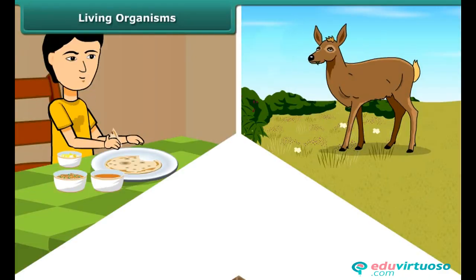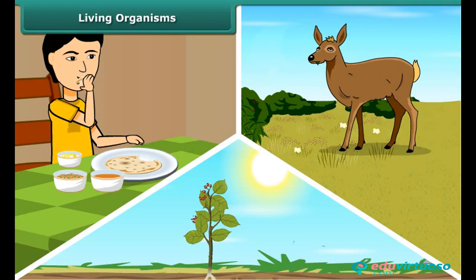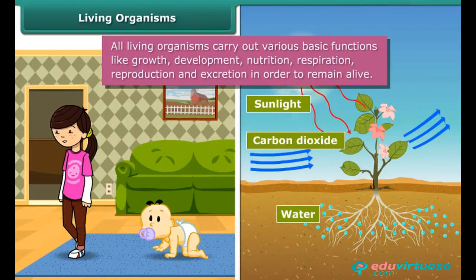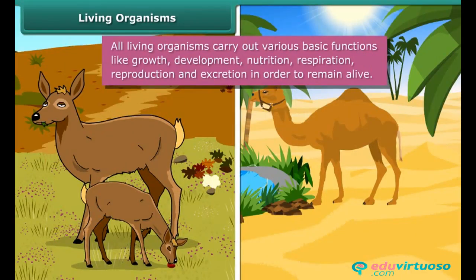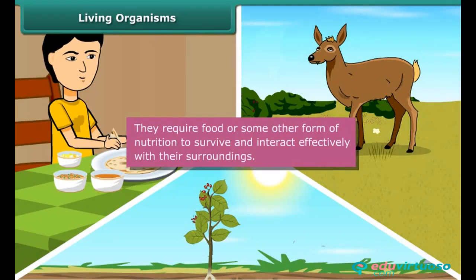We know that living organisms — human beings, animals, and plants — require food to survive in their surroundings. They show great divergence in their physical appearance, but they all grow and develop during their life cycle. All living organisms carry out various basic functions like growth, development, nutrition, respiration, reproduction, and excretion in order to remain alive. They require food or some other form of nutrition to survive and interact effectively with their surroundings.